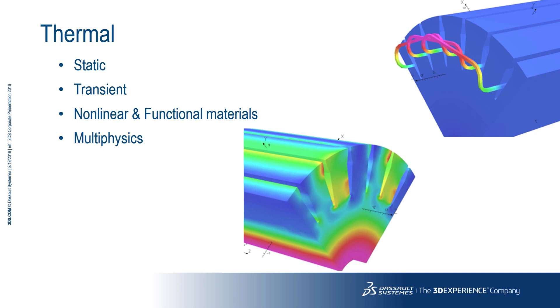Opera's thermal solver can be used to calculate thermal distributions on a static or transient basis. Opera can automatically pass results between the thermal, electromagnetic and structural solvers, so we can use temperature dependent materials and account for thermal strains.